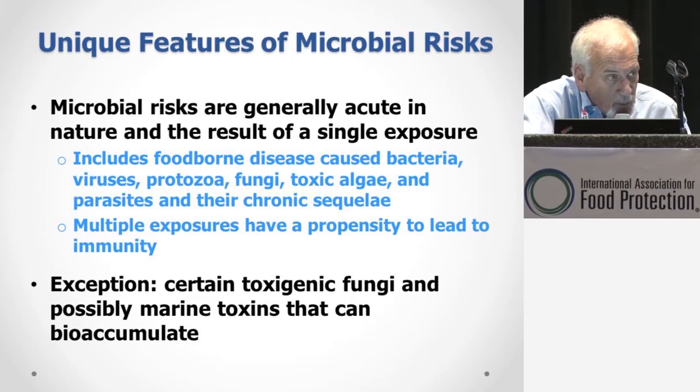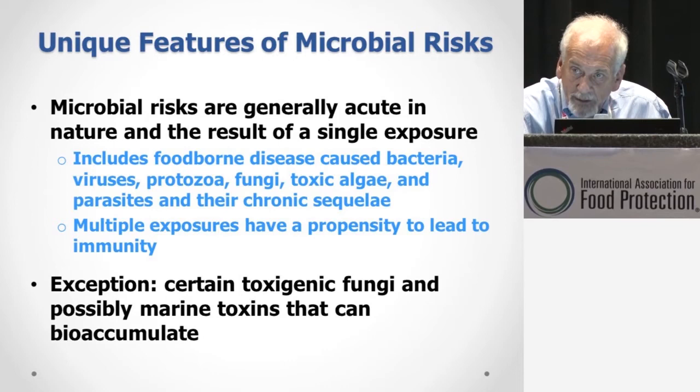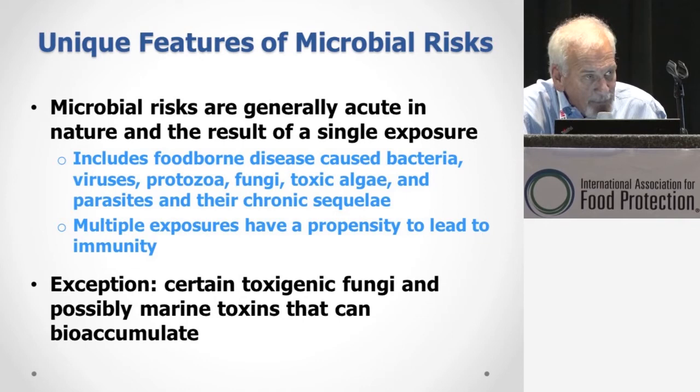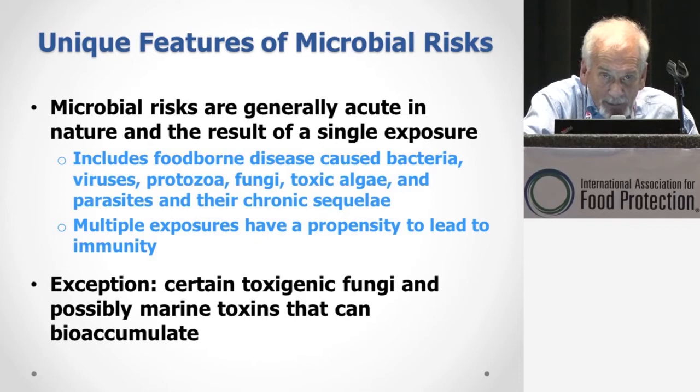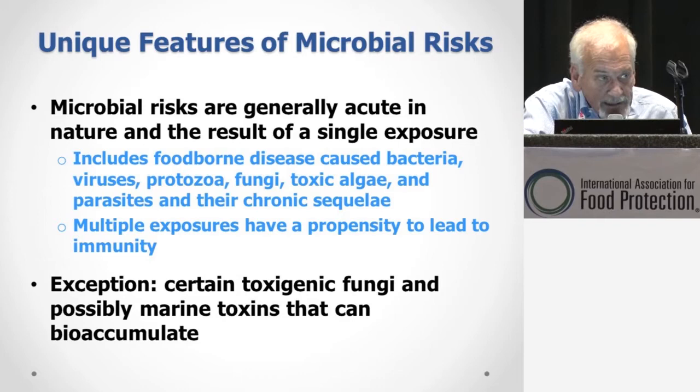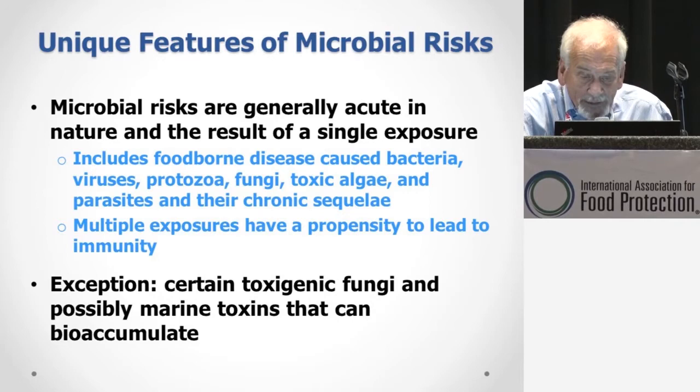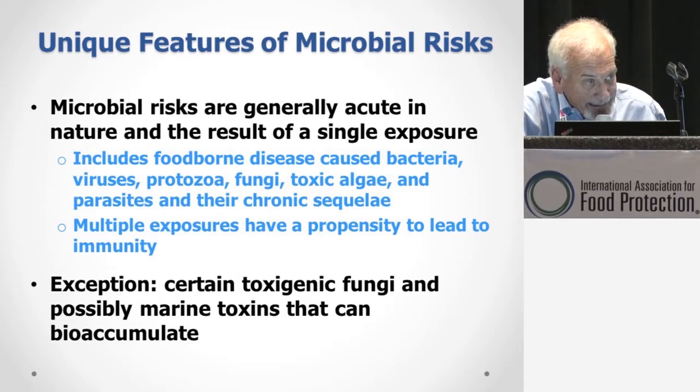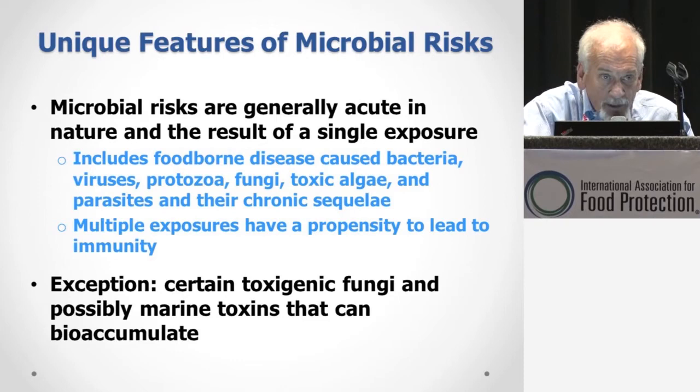As you increase the number of exposures in any one host, what you have is the likelihood that you're going to develop immunity. So what we typically use in looking at risk is a naive human — someone who has not been exposed to the agent and has no predetermined immunity. There are a couple of exceptions: if we're dealing with toxigenic fungi or marine toxins, where we potentially get bioaccumulation as a result of multiple exposures, they may require a different type of dose-response relationship.